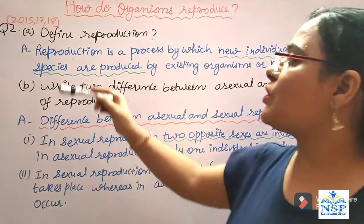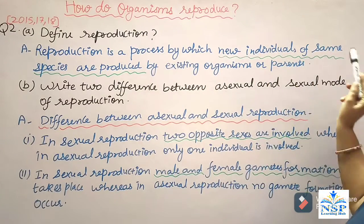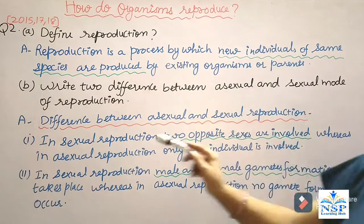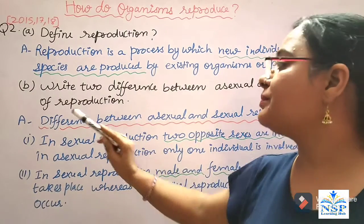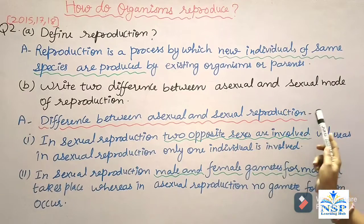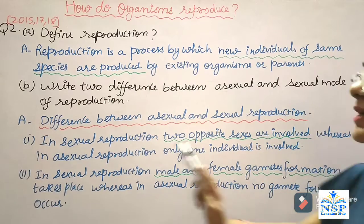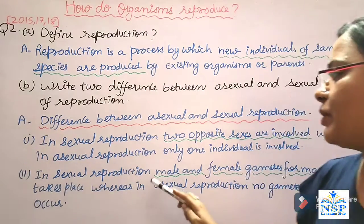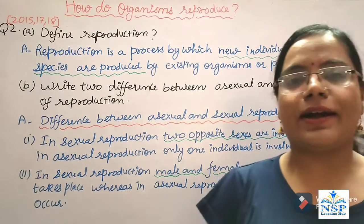Our next question is: define reproduction. Reproduction is a process by which new individuals of the same species are produced by existing organisms or parents. Write two differences between asexual and sexual modes of reproduction. In sexual reproduction, two opposite sexes are involved, whereas in asexual reproduction, only one individual is involved. In sexual reproduction, male and female gamete formation takes place, whereas in asexual reproduction, no gamete formation occurs.